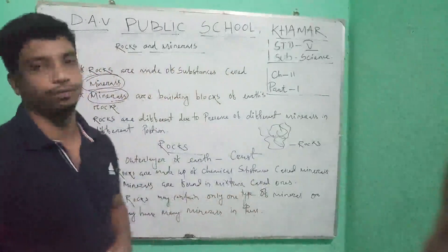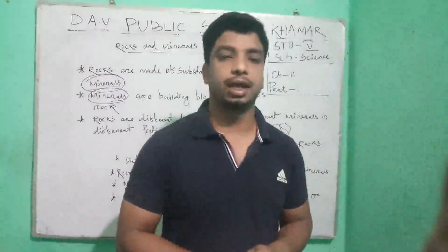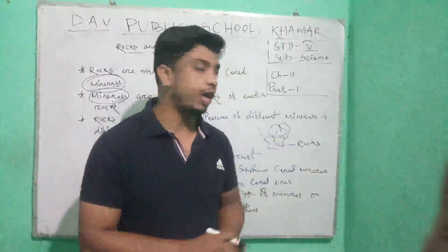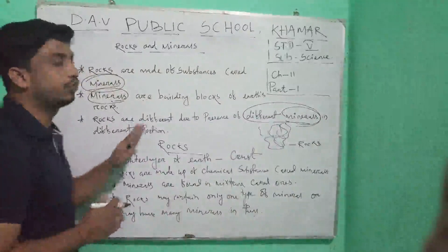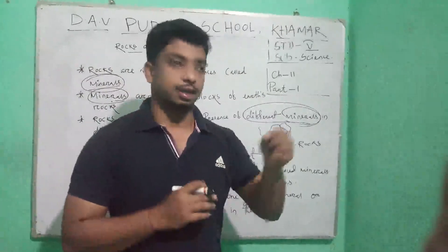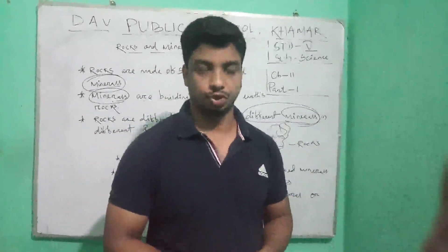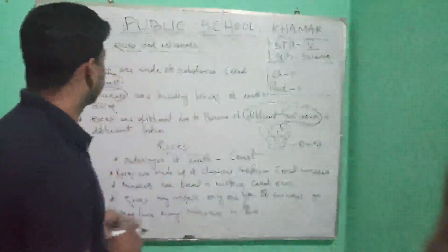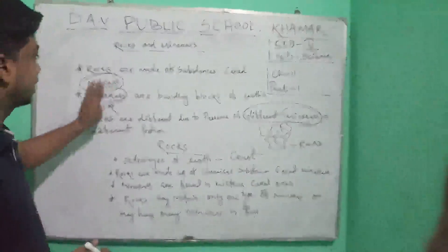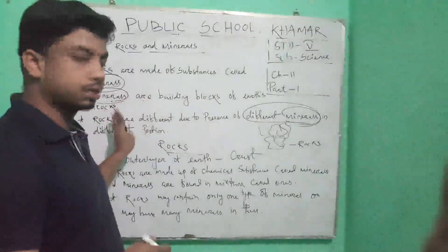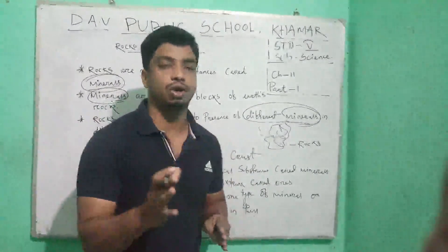Rocks vary from place to place. Why do they vary? Because different rocks have different minerals in different portions. So rocks are varied from place to place due to the presence of different minerals in different portions. These are the basic things about rocks and minerals.